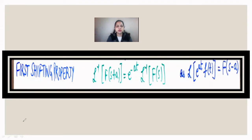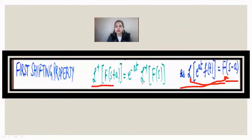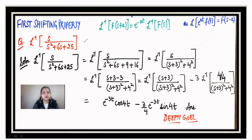Let us calculate the inverse Laplace using the first shifting property. We know that the Laplace of e^(at)·f(t) is F(s−a), so taking Laplace to the other side: Laplace inverse of F(s−a) = e^(at)·f(t). If it is F(s+a), the result is e^(−at)·f(t), where f(t) = Laplace inverse of F(s). So if there is a term F(s+a), the exponent carries a negative sign.